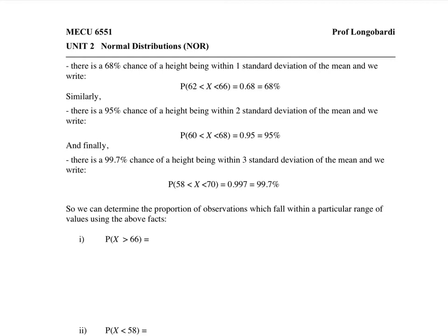We write that in mathematical or statistical notation like this. This is how we learned in the previous video to write out the proportion of observations between a range of values. Big X is in the middle, the smaller value comes first, the larger value comes later, and the arrows go smaller to bigger. This means in between 62 to 66.